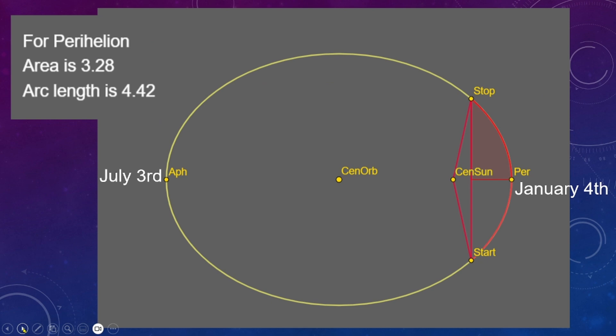For example, in this model I calculated the area of the red section. The math people can probably guess how I did that. With an ellipse of this particular shape, I found that when the area was about 3.3 square units, the arc length was about 4.42 units.